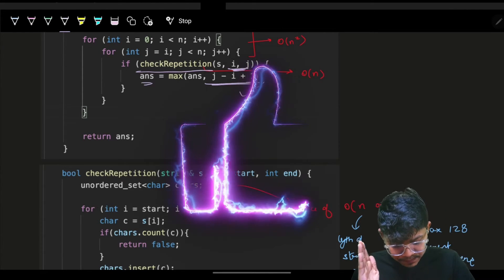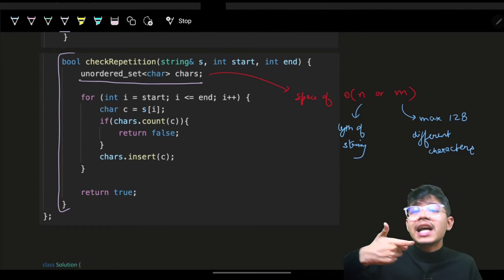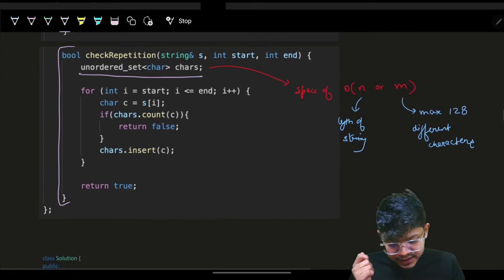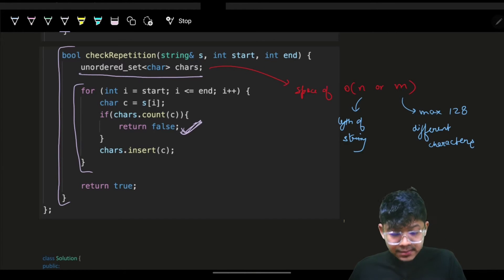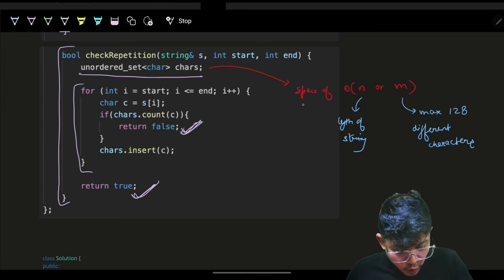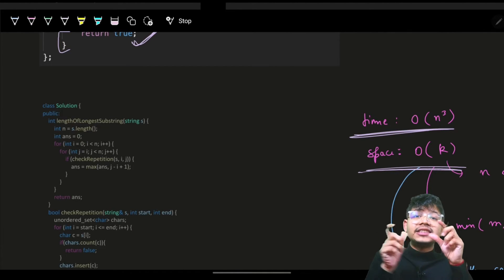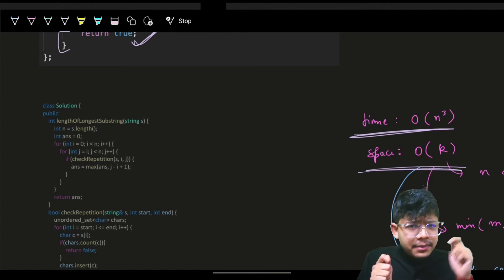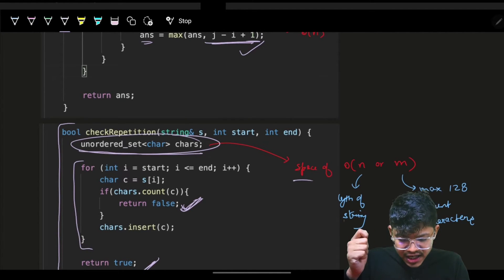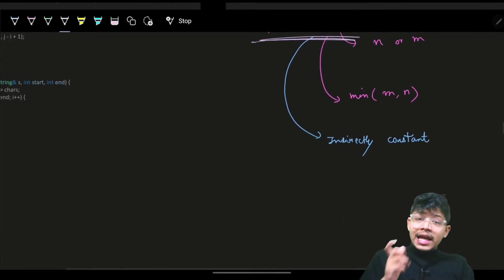The check-repetition function uses an unordered set or unordered map. You simply check if you find something repeating — if yes, return false; otherwise return true. That's how we solve it in O(n³) time. Space is O(k) because the hash set can contain at most 128 unique characters — that's the maximum number of distinct characters possible.